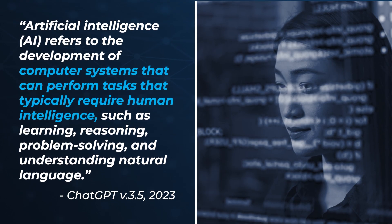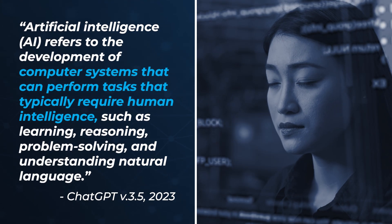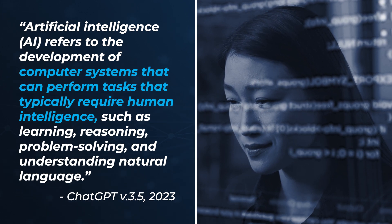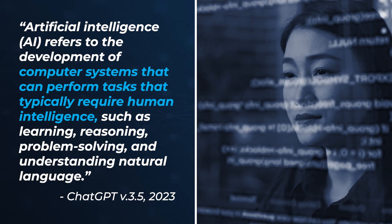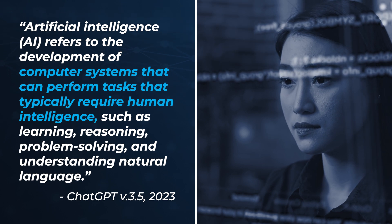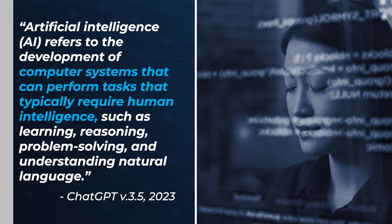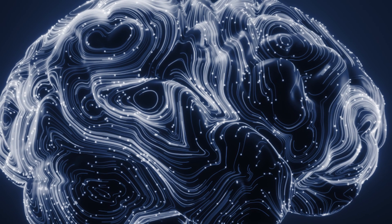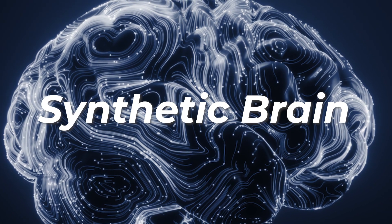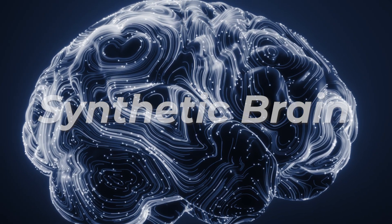Artificial intelligence refers to the development of computer systems that can perform tasks that typically require human intelligence, such as learning, reasoning, problem solving, and understanding natural language. Think of artificial intelligence as a synthetic brain capable of learning from its environment and making decisions.